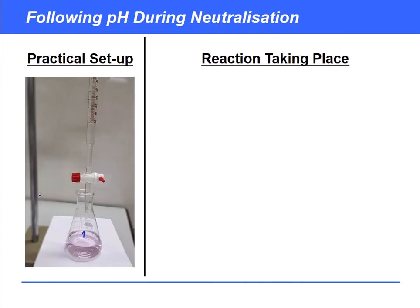Let's think about what we're doing here practically. The practical setup uses a burette on top and a conical flask, sometimes known as an Erlenmeyer flask, below. We put our acid or alkali into the conical flask at a known volume and concentration, then add the other from the burette. The burette has a tap that allows you to control the flow of liquid, even drop by drop, so you can follow the pH very easily.